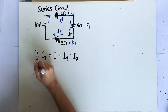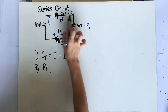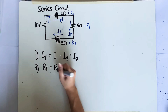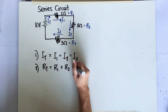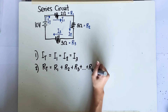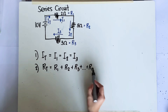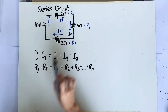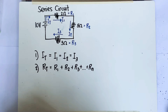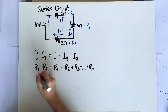Number two: to get the total resistance of a series-connected circuit, that is simply the algebraic sum of all the resistances connected in series. No matter how many resistors, it's R1 + R2 + R3 and so on. In this example with three resistors connected in series, the formula will simply be R_total = R1 + R2 + R3.